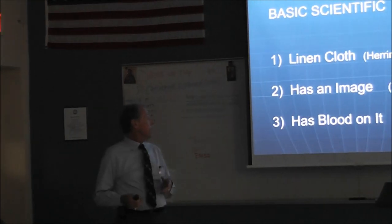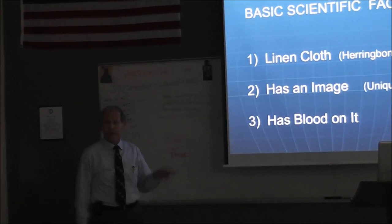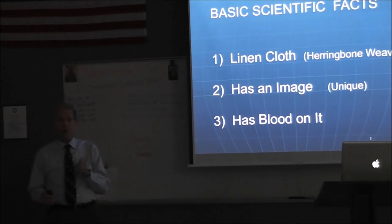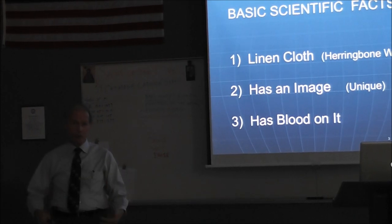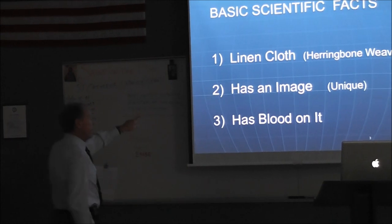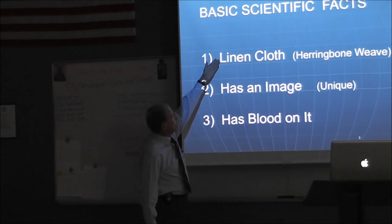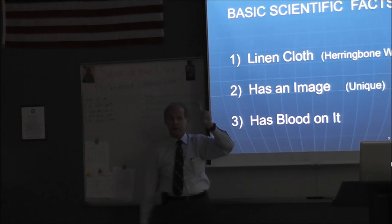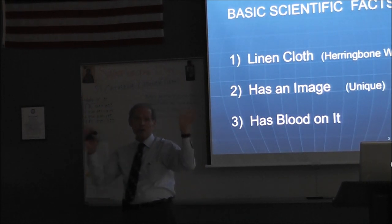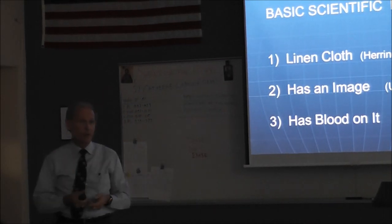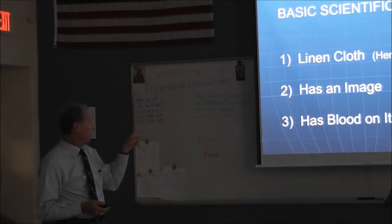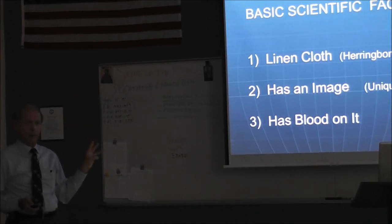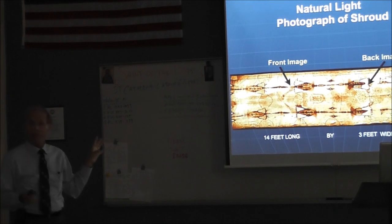All right. Now, back to what we're talking about. This cloth is linen. That's very important to know that it's pure. It's not cotton. It has a herringbone weave. Just like a herringbone sport coat. It has an image on it. It's a unique image. Because there are no other cloths that could be 2,000 years old that have images. This is the only one that has an image. There's lots of Egyptian cloths out there with blood on it. Burial cloths. But no image. This is the key. It has blood on it. Of course, blood could be on any cloth. All right. These are the three basic facts.